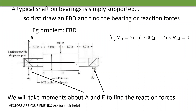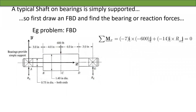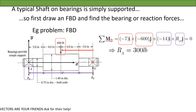Taking moments around point A: 7i is seven units long, with 600 pounds in the minus j direction, and 14i times Re times j — that cross product equals zero, so Re turns out to be 300 pounds. Doing the same for point E: minus 7i times minus 600j, minus 14i times Ra times j equals zero, so Ra is also 300 pounds. Notice the color coding so you can see which vector is which.